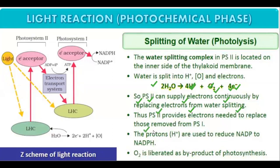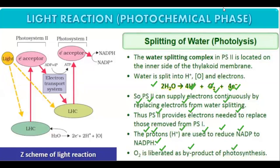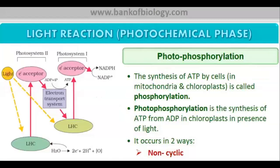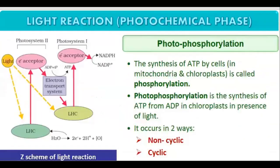The protons H+ are used to reduce NADP to NADPH, and oxygen is liberated as a byproduct of photosynthesis. Photosynthesis's byproduct is oxygen — the same oxygen we use in oxygen masks. So the plant's byproduct is very useful for us.